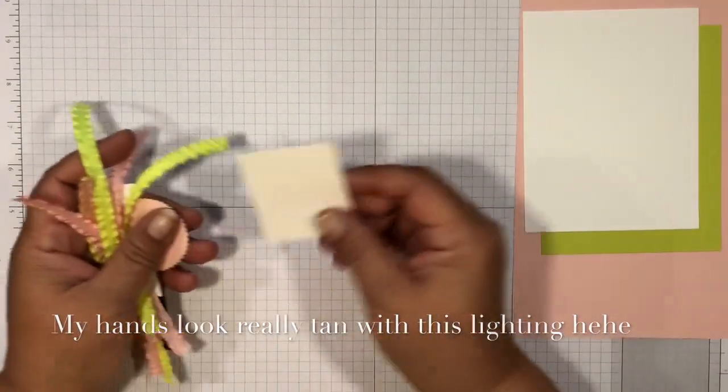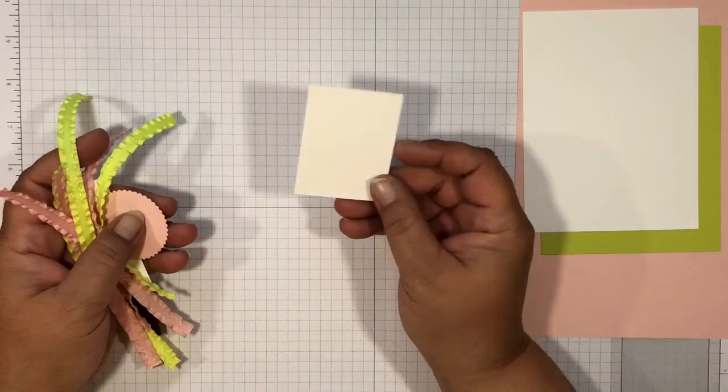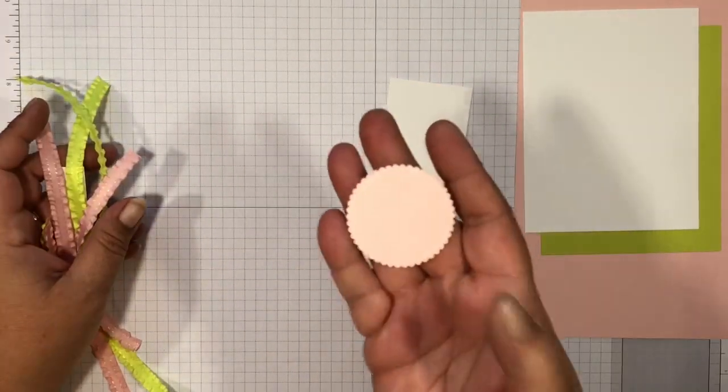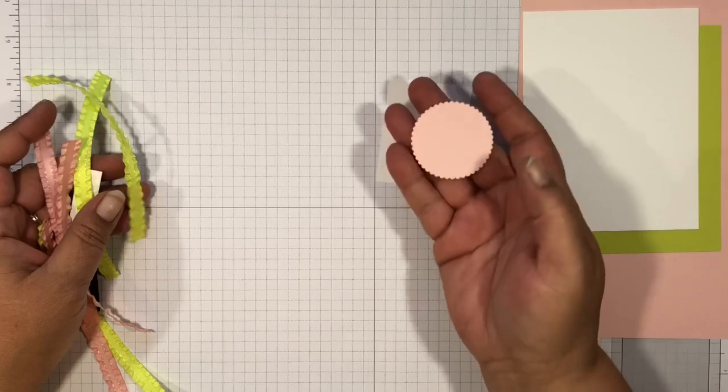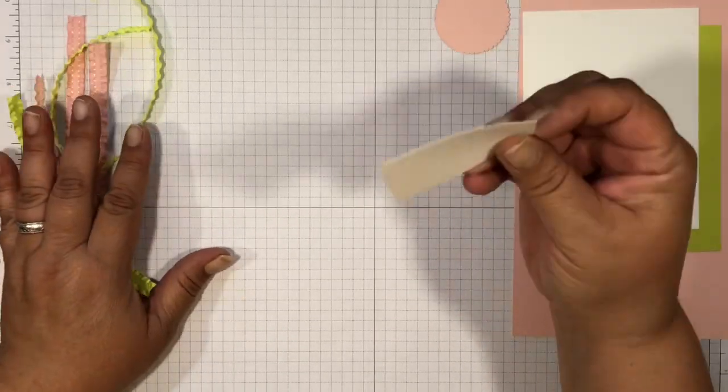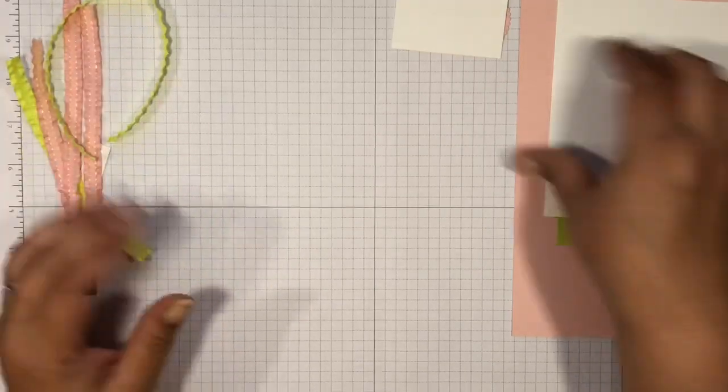You have a scrap piece of whisper white and then you will need a scrap piece of powder pink. I've already die-cut this one but you will need two scraps for this. We're going to stamp on this piece right here.